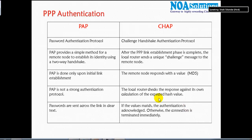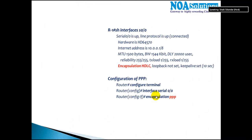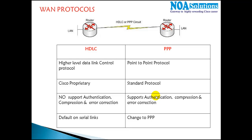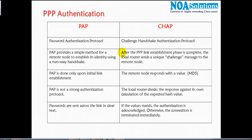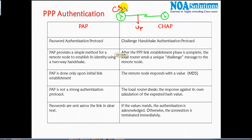In this section we'll continue our discussion on PPP. In the previous session we saw there are two different WAN protocols: PPP and HDLC. PPP supports authentication apart from compression and error correction. We'll see how to enable authentication and what protocols we use. The requirement is that the link should only come up after successful authentication, so we'll configure passwords on both sites.